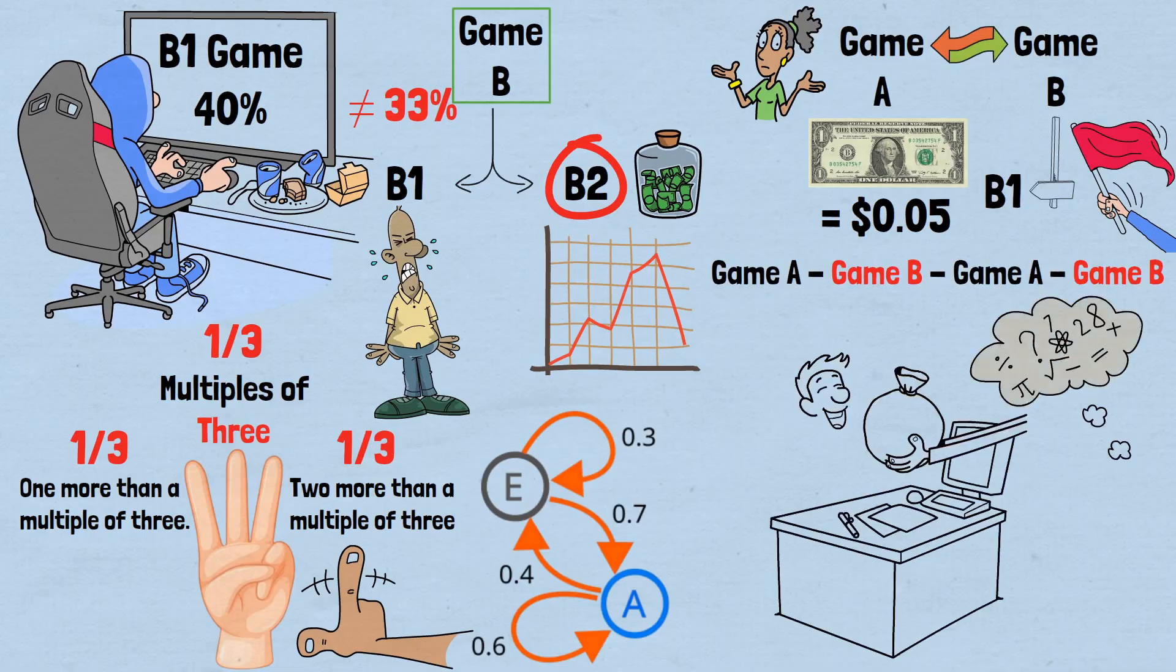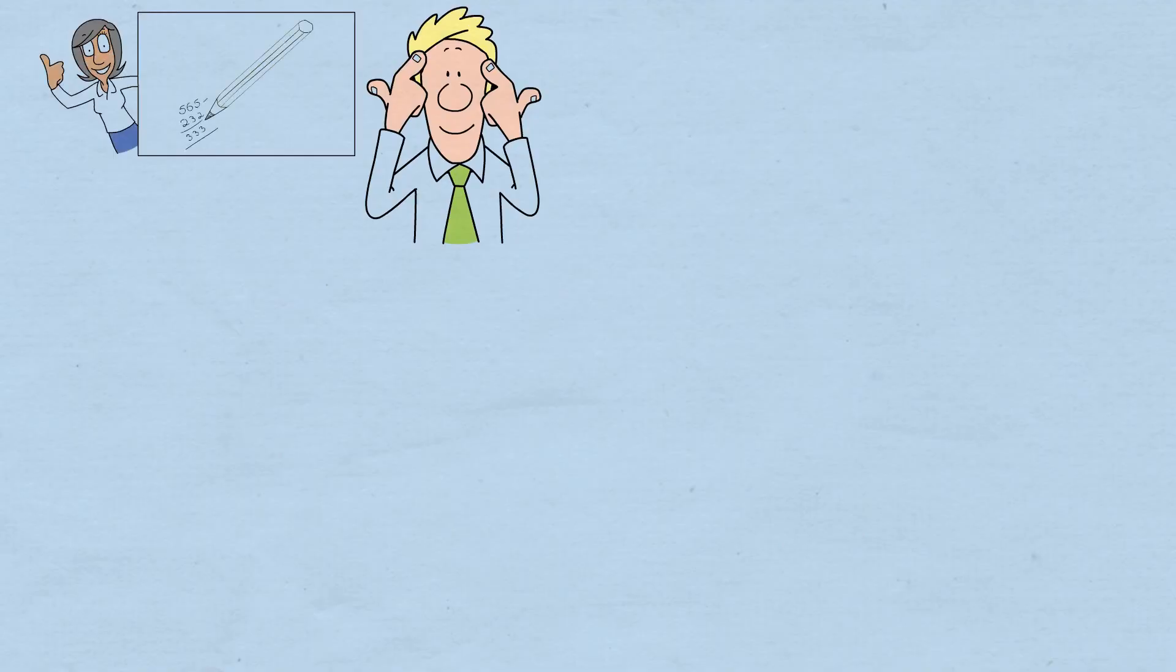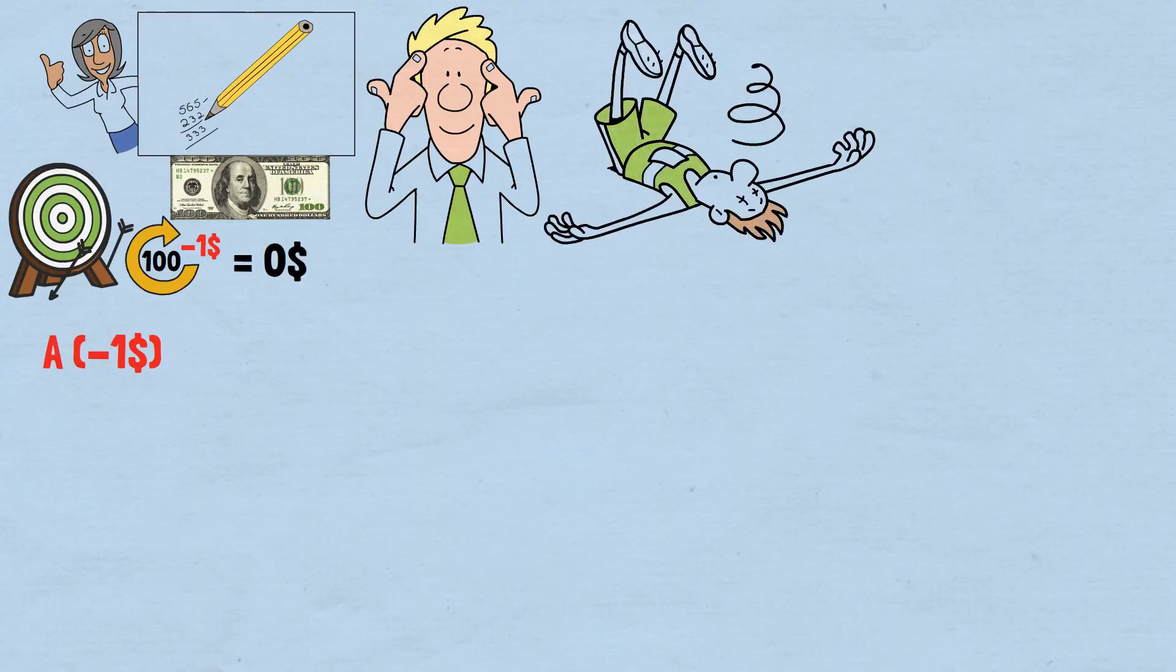To understand why this works, let's create a simplified version that makes the math crystal clear. Imagine you start with $100. Every time you play Game A, you lose exactly $1—no randomness, just a guaranteed loss. If you played only Game A 100 times, you'd lose $1 per game and end up with zero dollars—pure, predictable failure. Now consider this version of Game B: if your current money amount is an even number, you win $3. If it's an odd number, you lose $5.